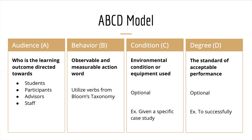Next is the condition — the environmental condition or equipment used. This is optional, but it only makes the learning outcome more specific and stronger. An example of a condition could be 'given a specific case study' or 'utilizing the resources provided.' Finally, the degree is the standard of acceptable performance — also optional. An easy example would be 'to successfully,' or any descriptive word that shares the standard of performance aligned to the learning outcome.